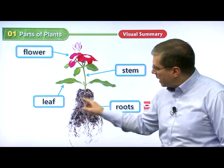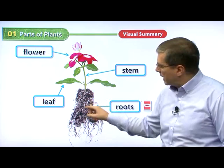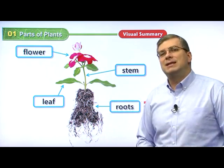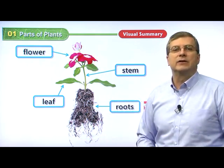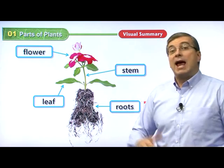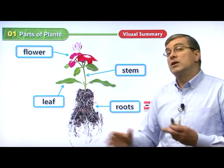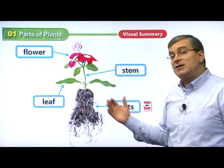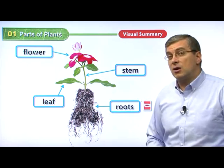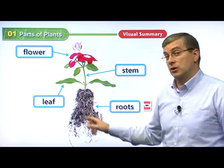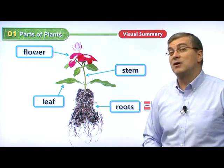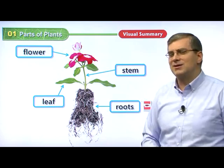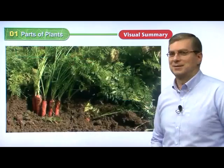This is just one type of roots of a plant — this is kind of a typical plant. But there are many different kinds of plants, and different kinds of plants have different looking parts. Let's look at a video with a very different looking type of root. Can you guess what it is? Well, let's take a look at the video.